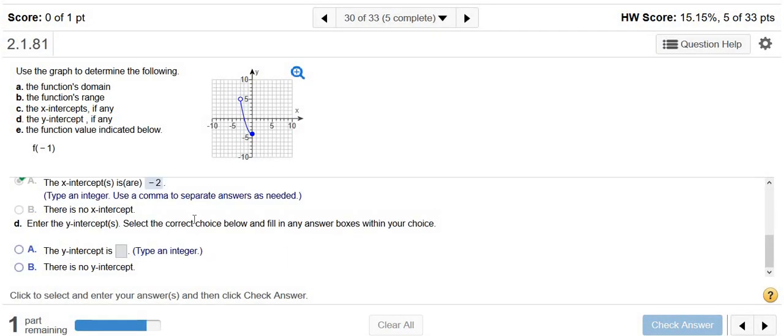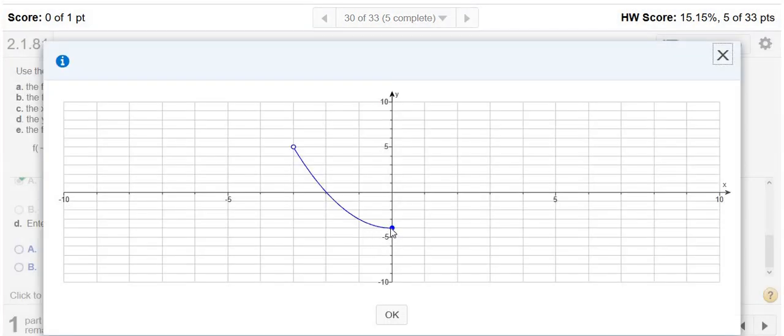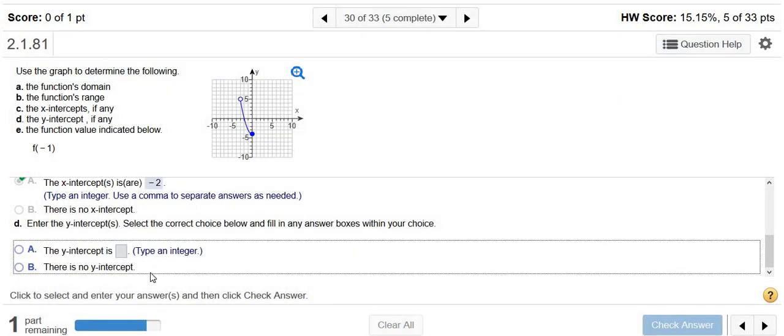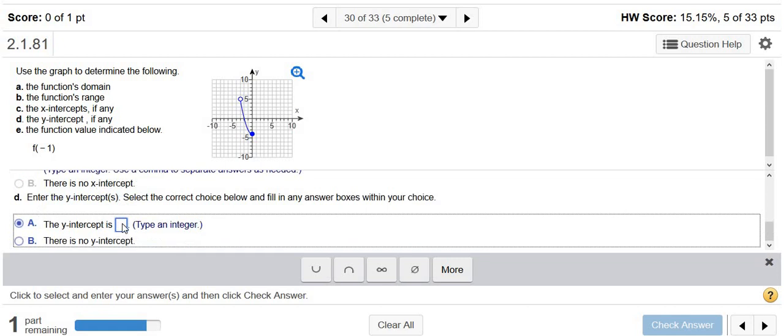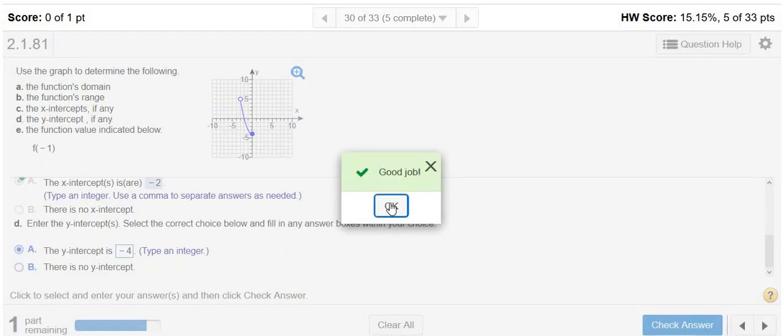Good stuff. And then the y-intercept is where it crosses or touches the y-axis. Well, it actually touches it at negative 4. So that would be the y-intercept. So negative 4. The y-intercept is negative 4. Good.